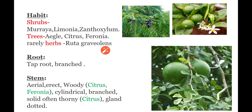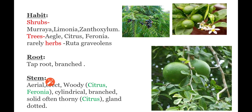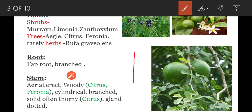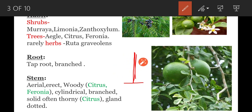Next are the vegetative characters of the Rutaceae family. First, root: root is generally a tap root system and branched. Next vegetative character is stem: stem is aerial, meaning it is exposed to the external atmosphere. Stem is erect — it grows straight. Stem is woody; examples of woody plants are Citrus and Ferronia. Stem is cylindrical and branches are present on the stem.